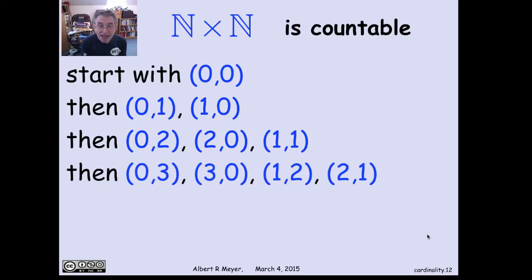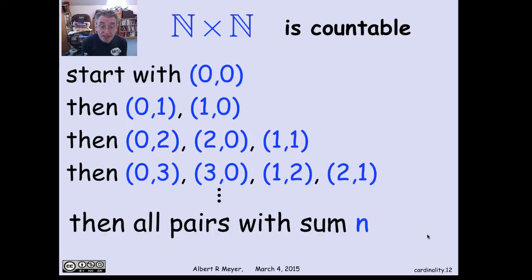If you can see what I'm doing, I'm basically listing the pairs in the order of the sum of their coordinates. The nth block of pairs that I'm going to list will be the pairs whose two coordinates sum to n. There'll be n plus 1 of those, and I keep going in this way.